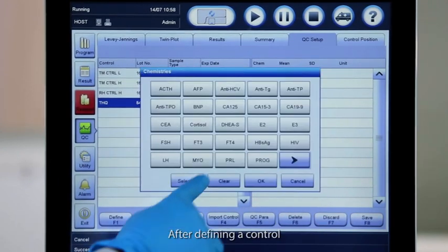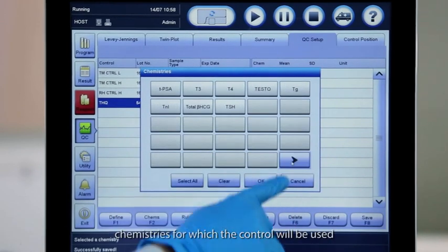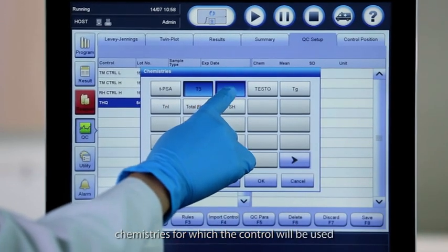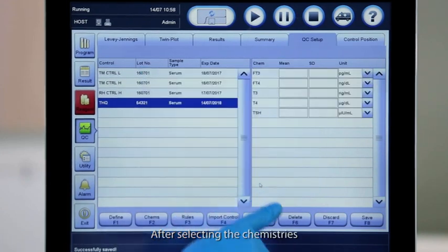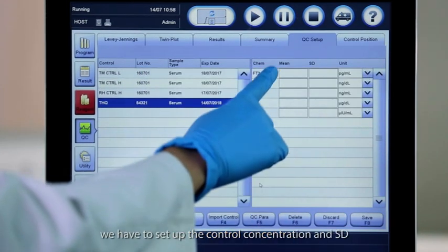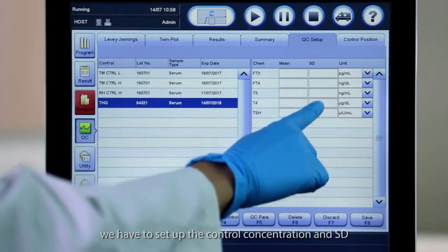After defining a control, you need to select chemistries for which the control will be used. After selecting the chemistries, we have to set up the control concentration and SD.